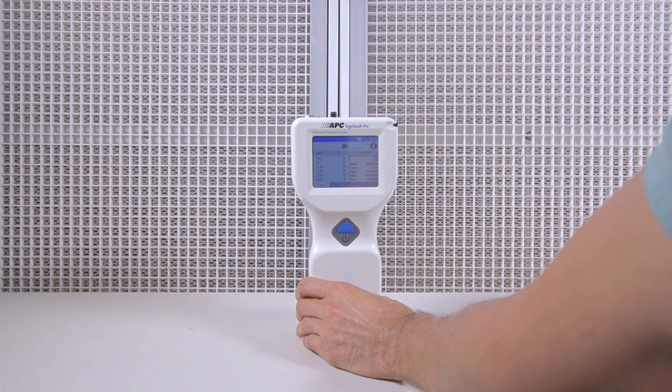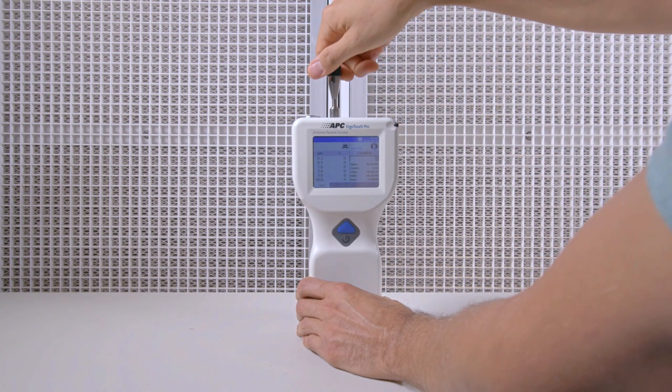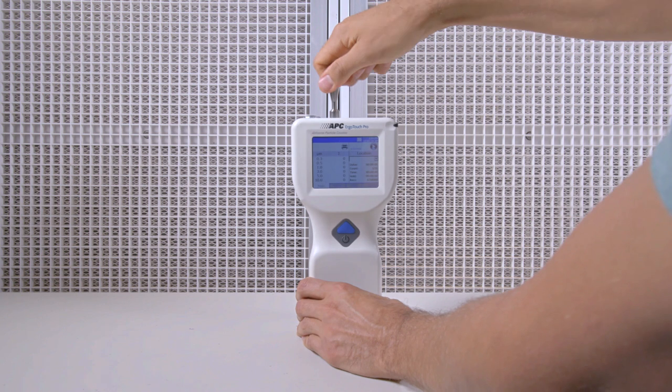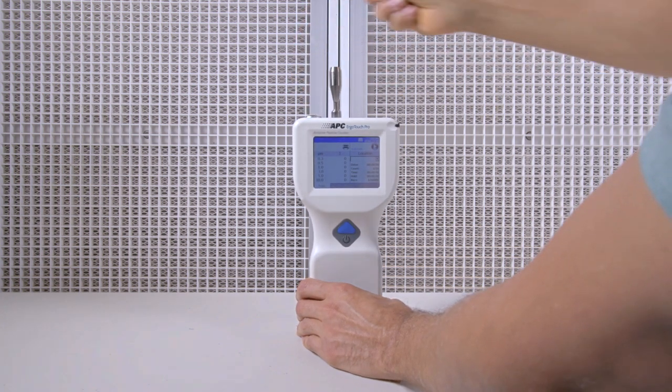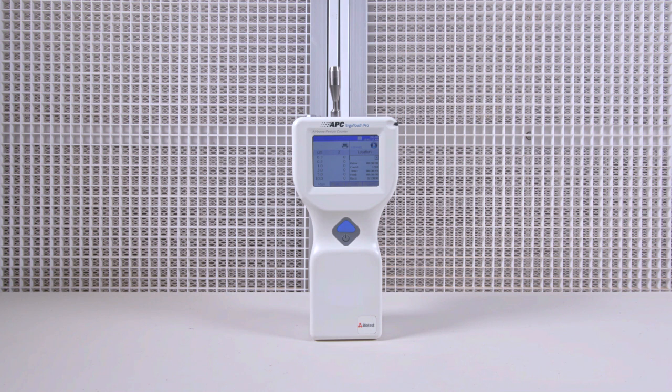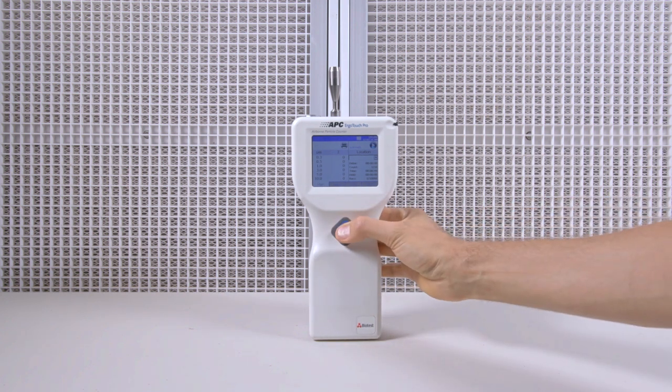This ambient reading will be a good estimate of the airborne particles that we can expect to find in most common rooms in households or buildings. So, we start up the machine, and the counter begins priming.